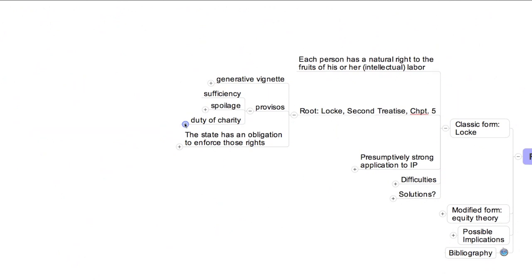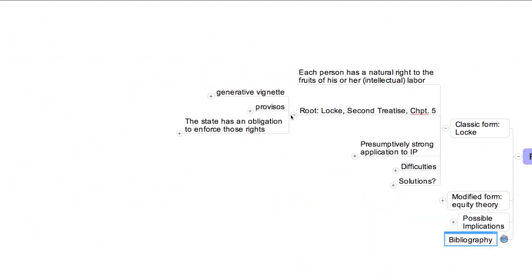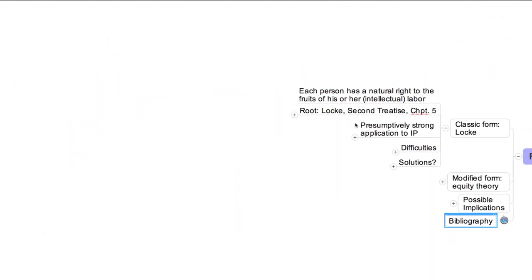Many nuances and controversies lurk in this quick summary. In particular, I've not said anything about the longstanding debate concerning the extent to which Locke should be understood as an apologist for capitalism. If you're curious about such matters, feel free to explore some of the materials listed in the bibliography, to which there's a link on the map. But we're going to press on to consider the application of Locke's theory of real property to copyright.